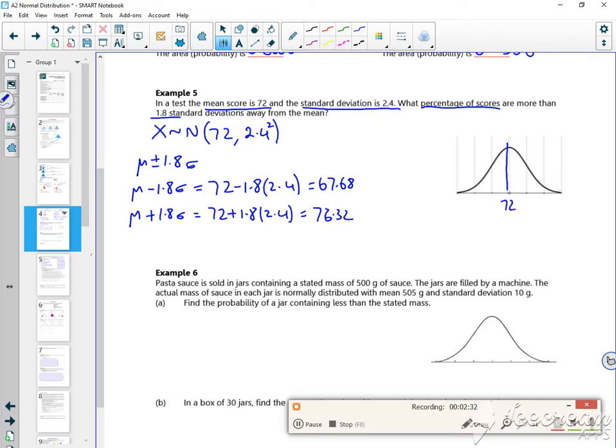because it wants it outside of it, I want from 76.32 and I want from 67.68. So if I find the bit in the middle and take one off it, that's what I'm after.